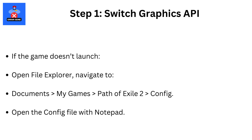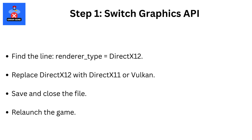If the game doesn't launch, open File Explorer and navigate to Documents, then My Games, then Path of Exile 2, then Config. Open the config file with Notepad. Find the line: Renderer Type equals DirectX 12. Replace DirectX 12 with DirectX 11 or Vulkan. Save and close the file.